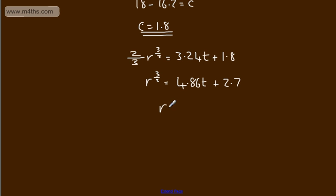So we can say that r will be equal to 4.86t plus 2.7 to the power of 2 thirds. I'm going to raise both sides to the power of 2 thirds. So that will give me the answer. So that is my 7 marks and lots of different ways around that.